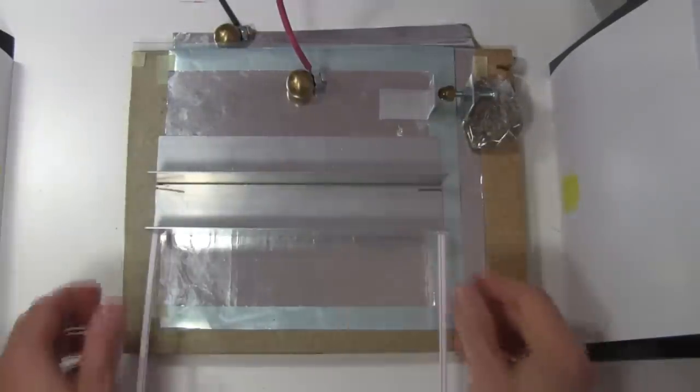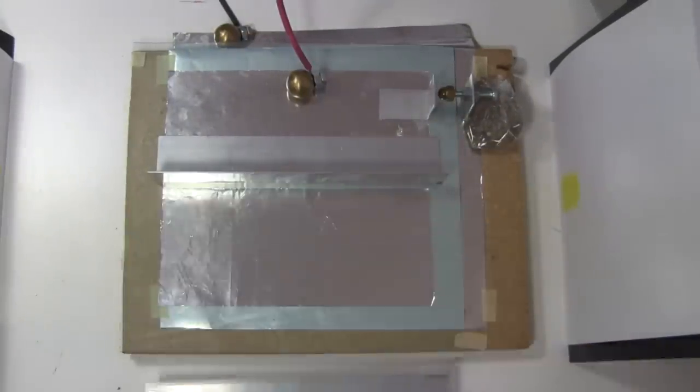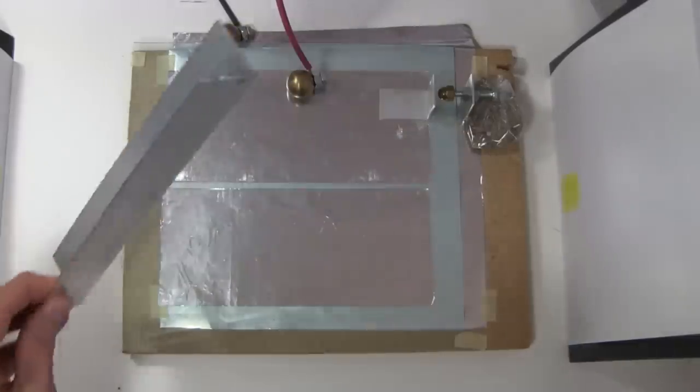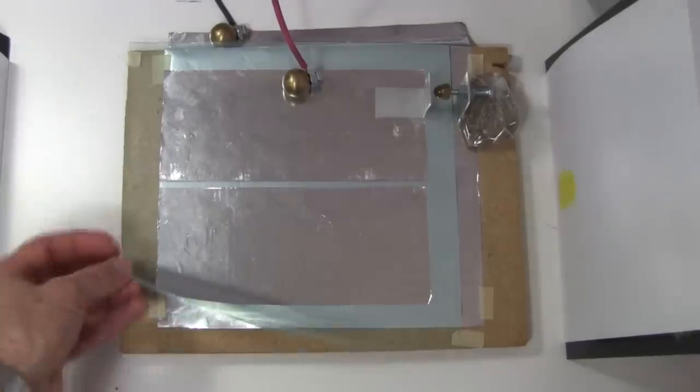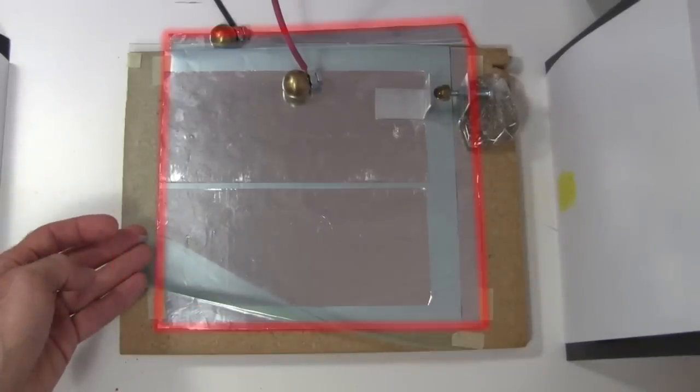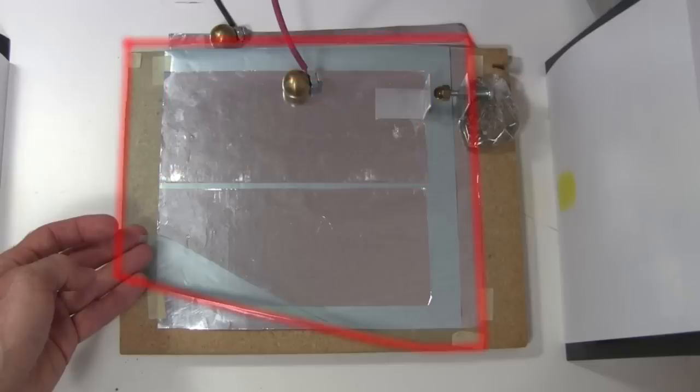On either side of that spark gap are this angle piece and this angle piece. And lastly, there are two capacitors here. One is formed by this small sheet of aluminum foil, the dielectric, which in this case is a sheet of polyethylene, and the larger sheet of aluminum foil under that. The second capacitor is this small sheet of aluminum foil, the same sheet of polyethylene and the same larger sheet of foil underneath.